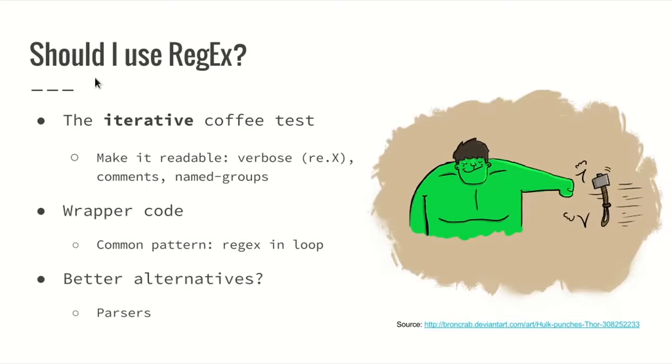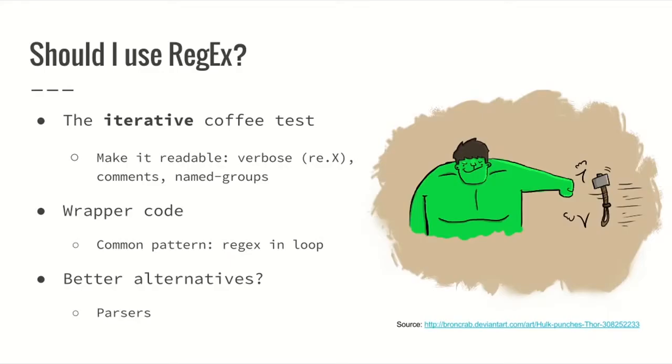Make your regular expressions readable. Use the verbose function. You can add new lines and white spaces to your regular expression, use comments, and use named groups. All these things help you and others read your regular expressions. The second thing to note is how much code you have to write around your regular expression. A common pattern I find myself doing and then regretting immediately is having a bunch of regular expressions applied to some string over and over again in a loop. Once I got this bad sign when I tried to parse this DSL, I started thinking about better alternatives.